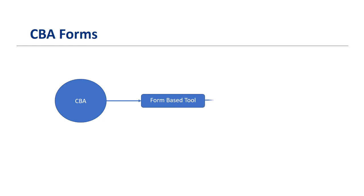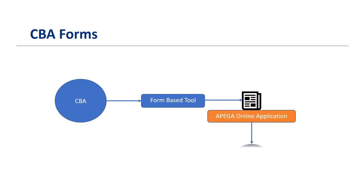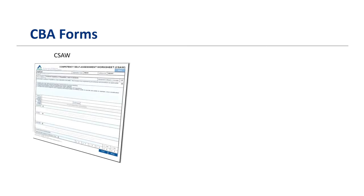CBA is a form-based tool available online as part of the APEGA application. Applicants must complete three sets of forms. The first is the Competency-Based Assessment Worksheet, or SEESA. This is a pre-application resource where applicants can self-assess their competencies. Completion of the SEESA is optional but highly recommended for engineering applicants.